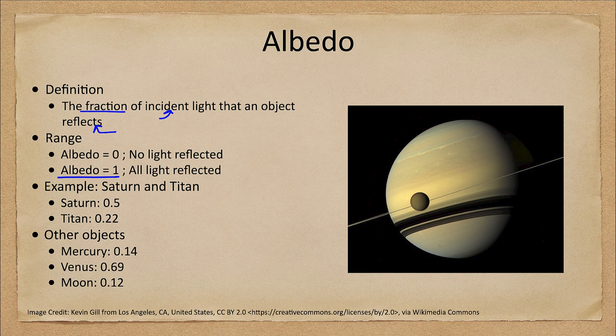An albedo of zero would mean that no light is reflected, and of course that again is an ideal situation — everything is going to reflect a little bit of light. So everything else is going to be in between those two values; your lowest albedo would be zero and your highest would be a value of one.